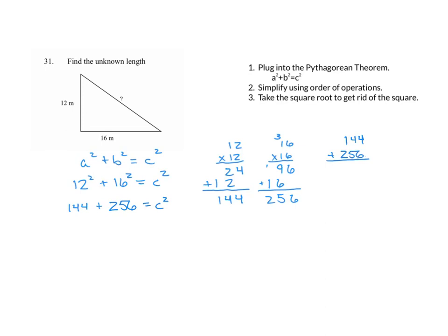We get 4 plus 6 is 0, carry the 1. 1 plus 4 plus 5 is 10, so we get 0, carry the 1. And 1 plus 1 plus 2 is 4. So we get 400.